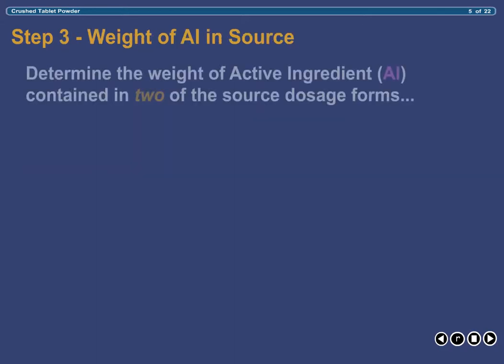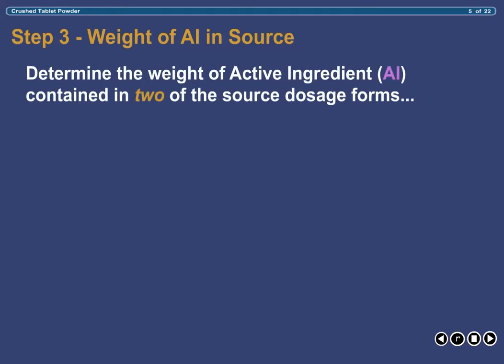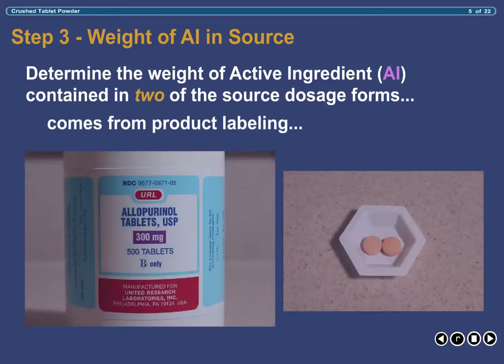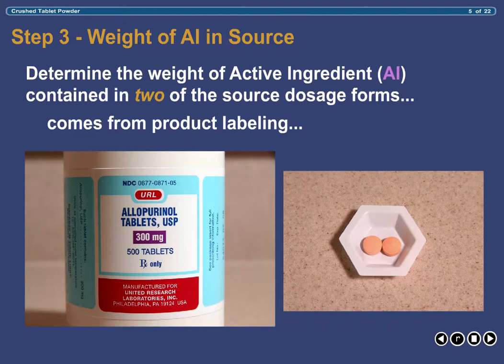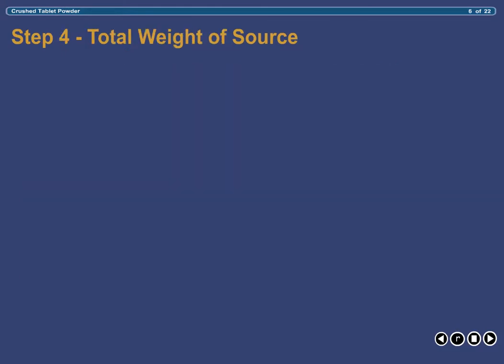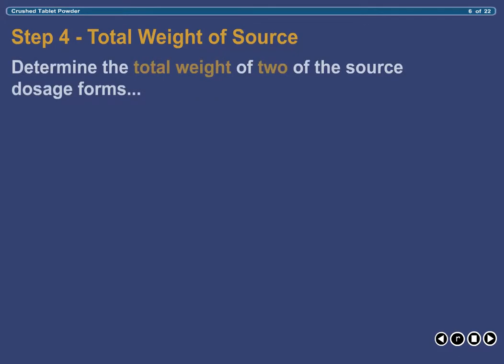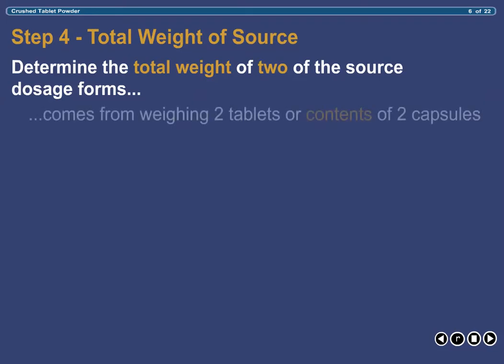Once you have identified the source of active ingredient that you will be using, the next step is to determine the amount of active ingredient contained in two tablets or the contents of two capsules, depending on the source you are using. This is obtained directly from the product labeling. In this example, two 300mg allopurinol tablets obviously contain 600mg of the active ingredient allopurinol. The next step is to determine the total weight of two of the dosage forms, obtained by weighing them directly on a digital or torsion balance.